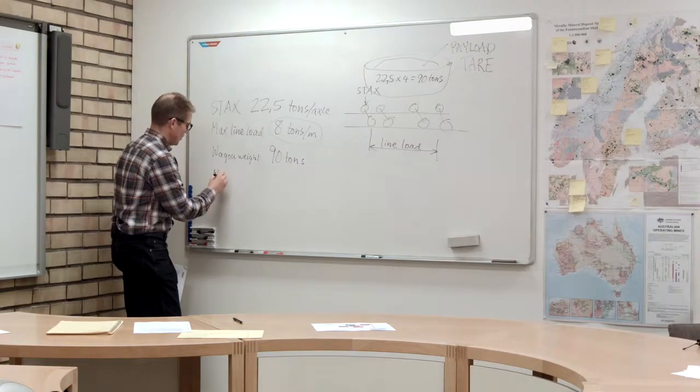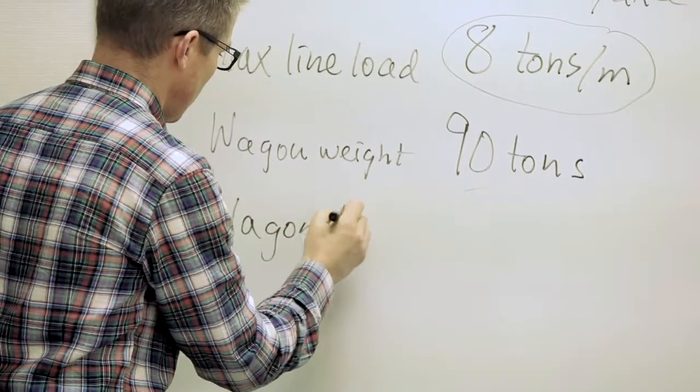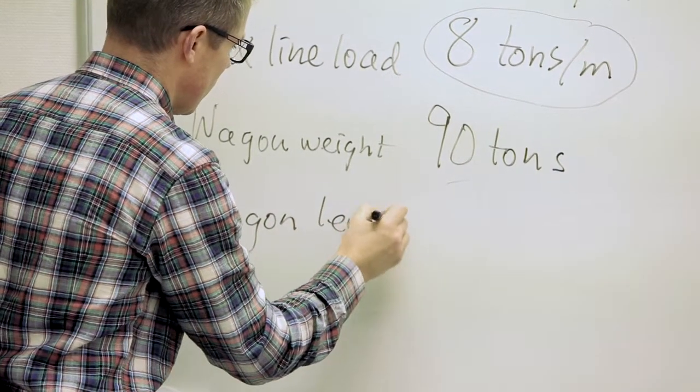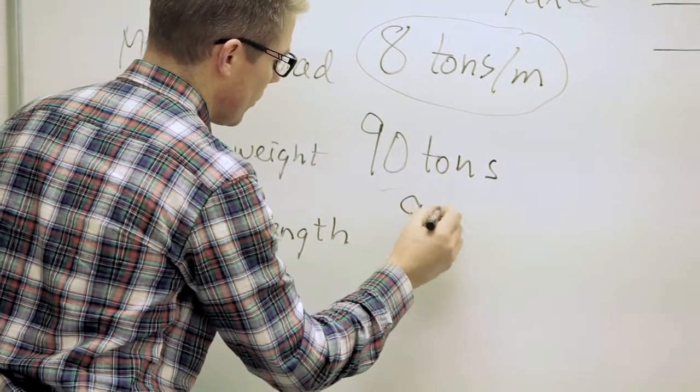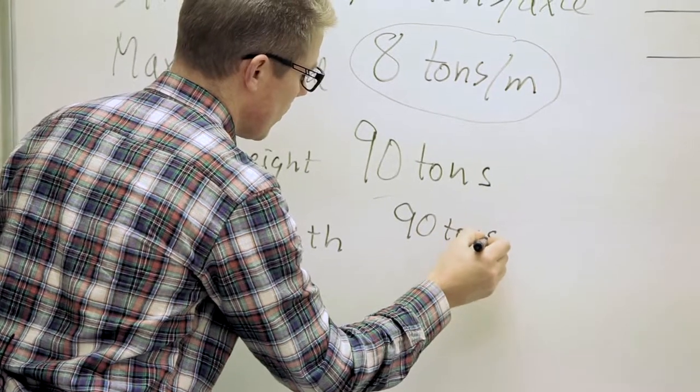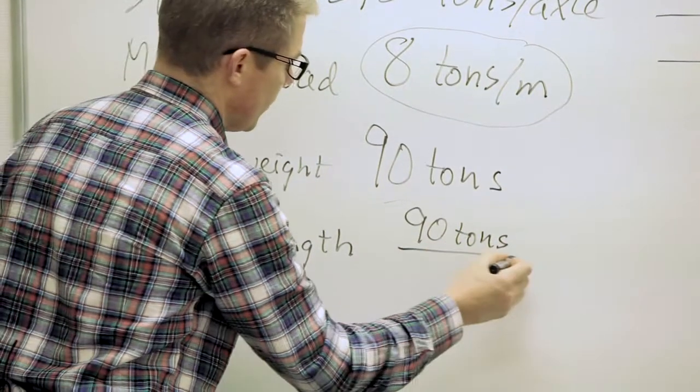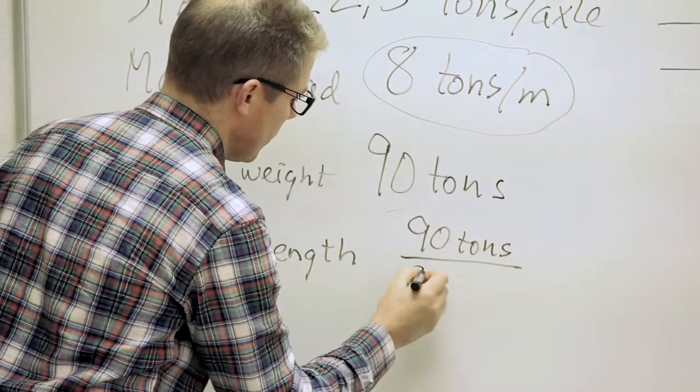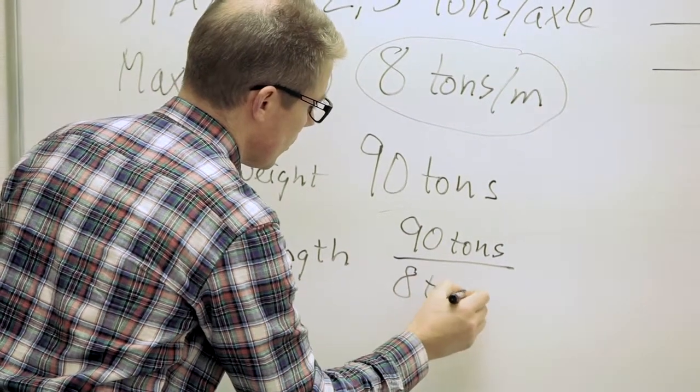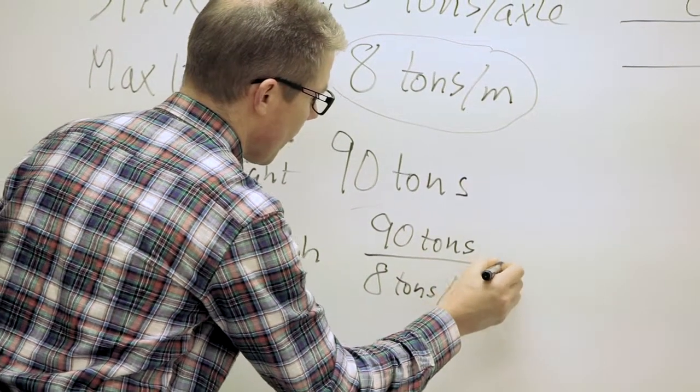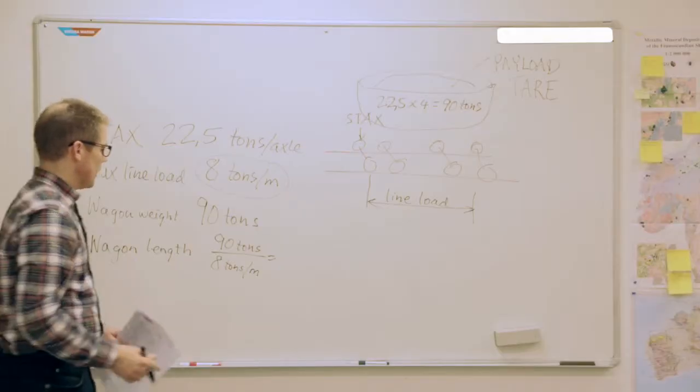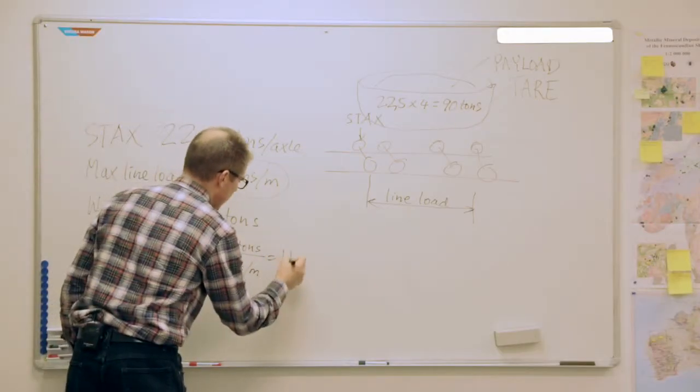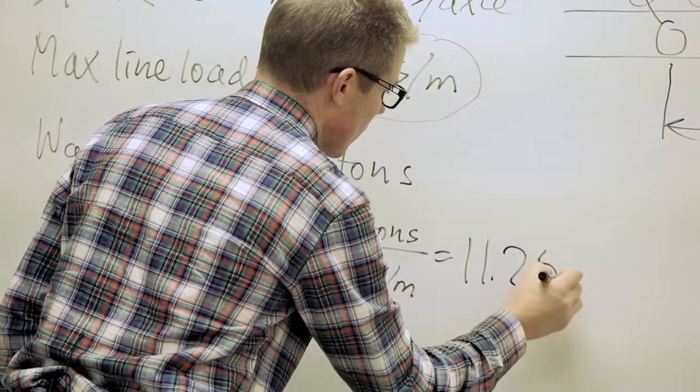Wagon length: the total weight is 90 tons, and we divide that with the eight tons per meter. That turns into 11.25 meters.